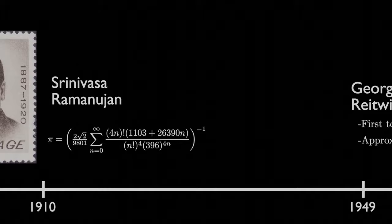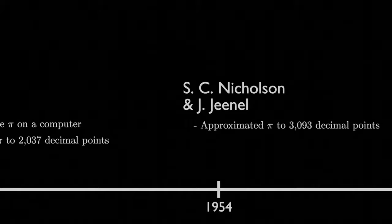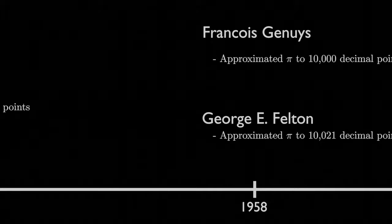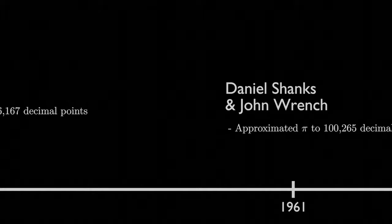Our approximations of Pi continued to improve throughout the 20th century. However, in the 1950s our approximations had begun to get exponentially better with the use of computers. As computers performed better, our approximations also got better.